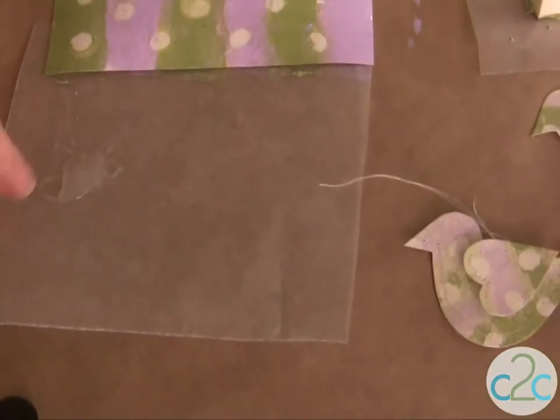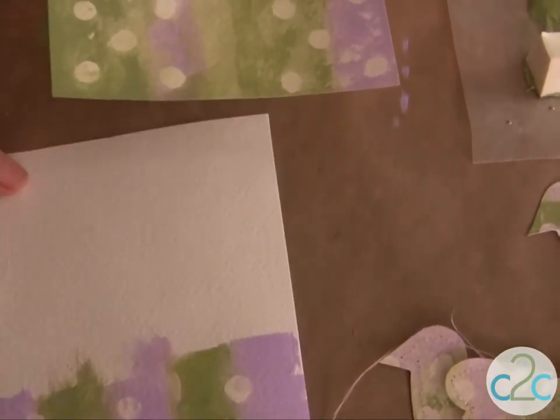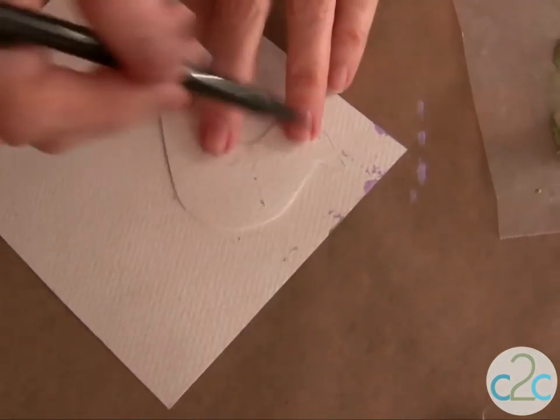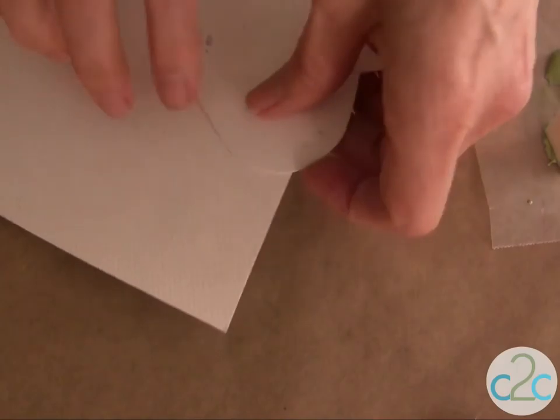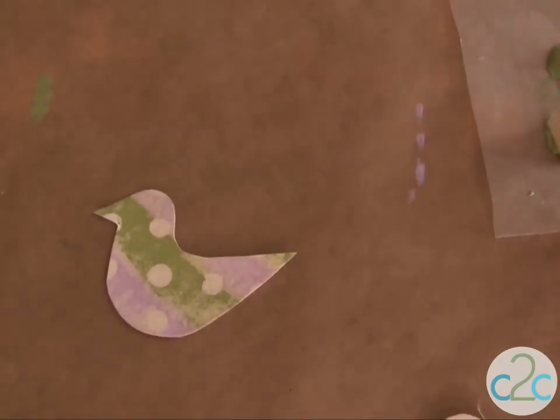So continue to work sections at a time. Sometimes I like to draw through this a little bit more with the wet wipe. Pull back. Continue to create that same design on your entire piece of watercolor paper.